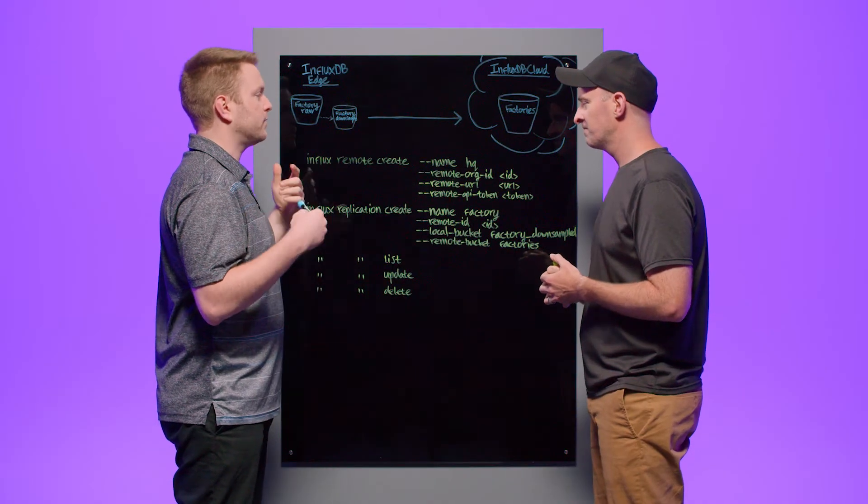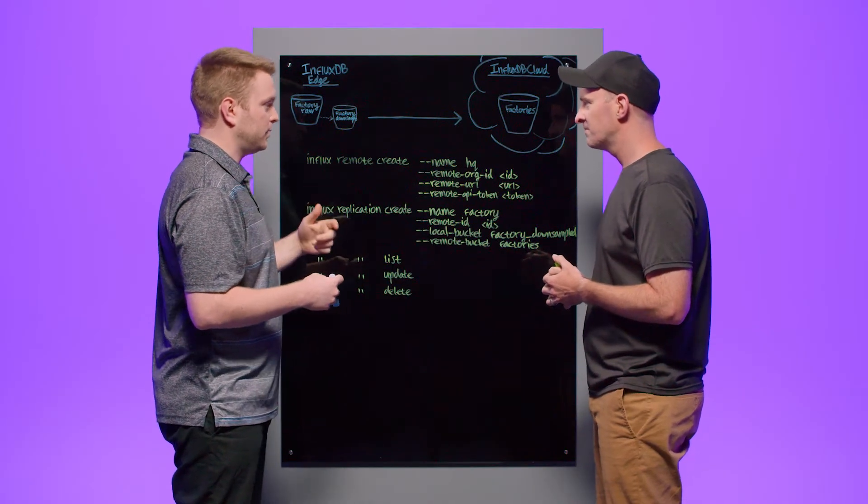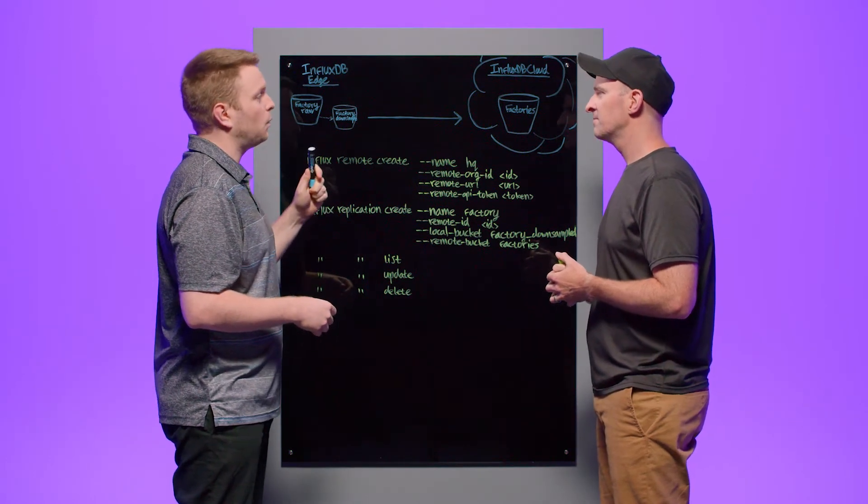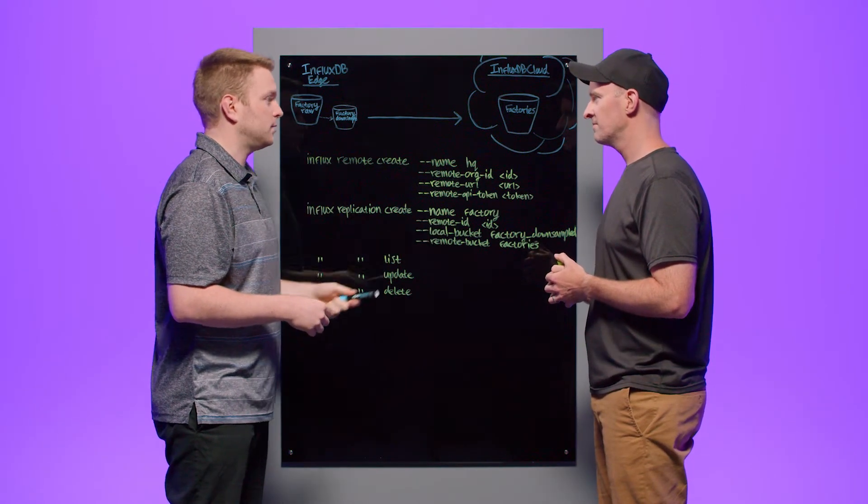Edge data replication is a feature that was built into the open source, with the idea that we want to stream in real time data from an open source node, usually at the edge, to a remote bucket in a physically remote instance of InfluxDB. And I'm emphasizing bucket because it happens at the bucket level. And the reason why that's significant is it allows users to be selective about what data they actually do send to the cloud.